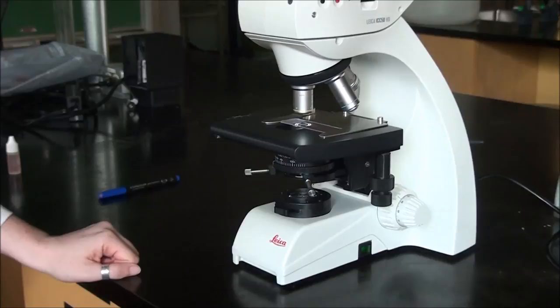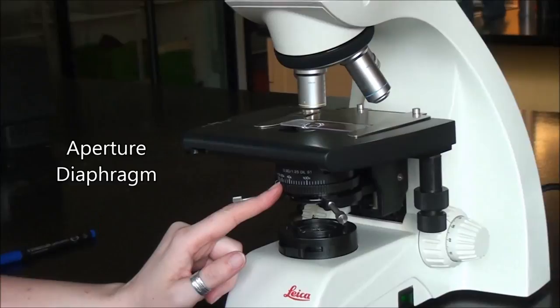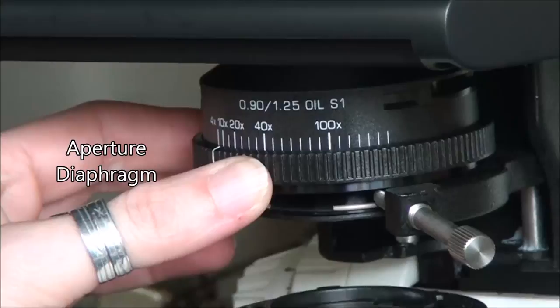One final adjustment we need to make is our aperture diaphragm. Situated on the condenser housing that has our condenser lens, we have the diaphragm that controls the amount of light, and we always want to make sure that it is matching the objective lens.